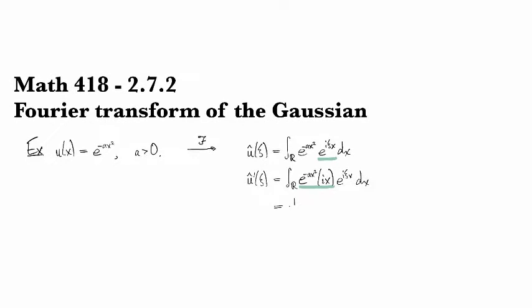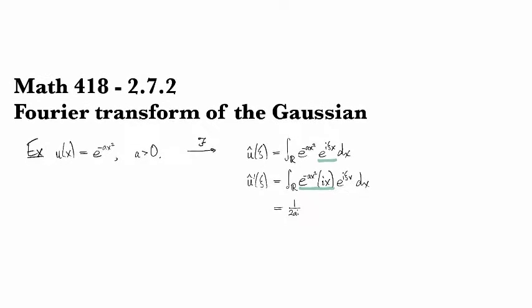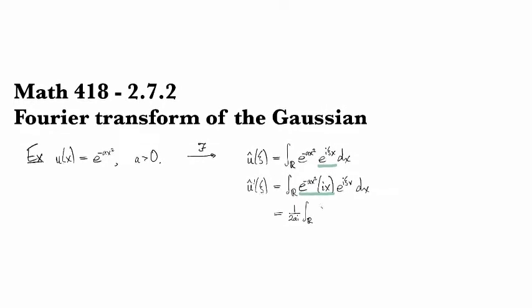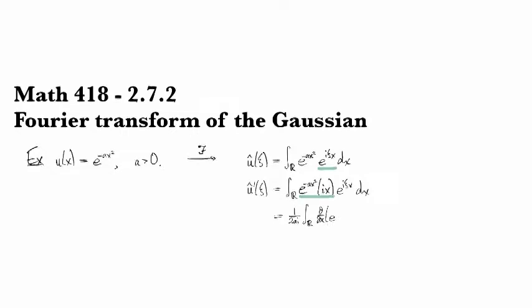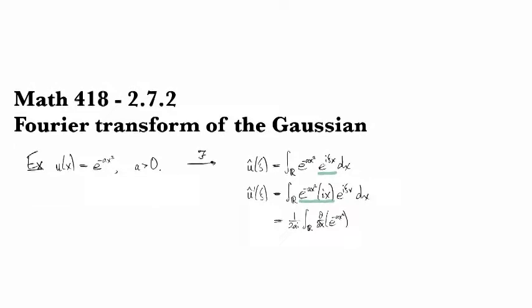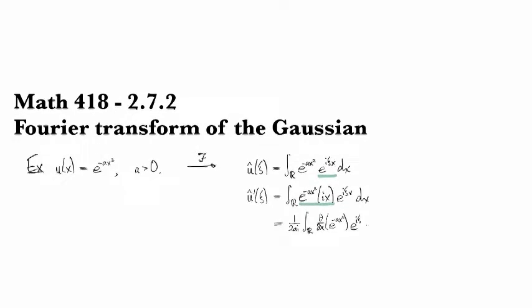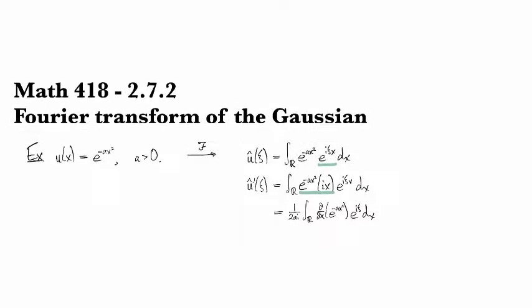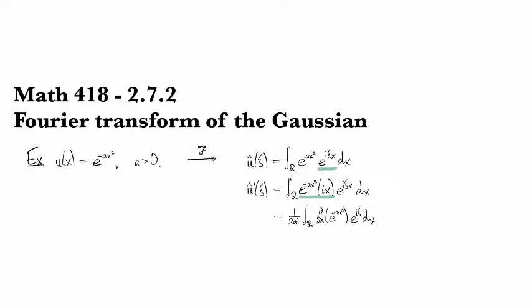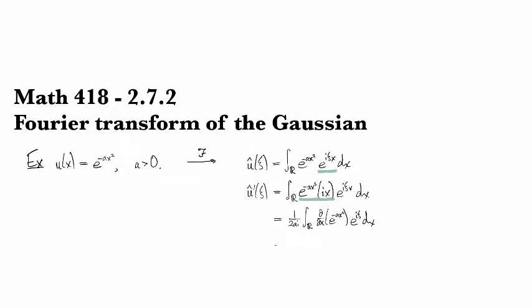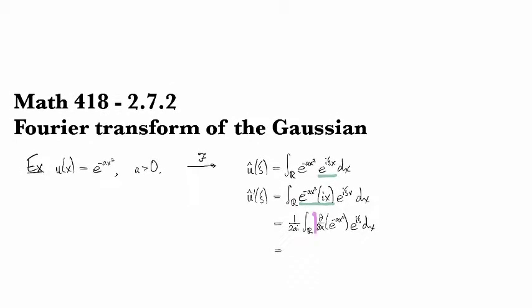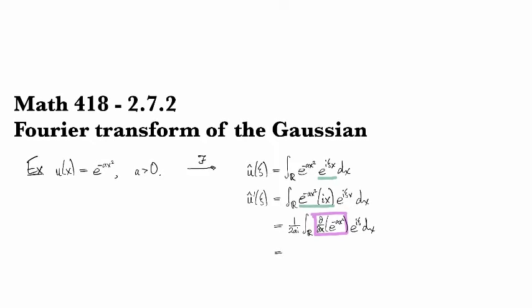So if I take that 1 over 2ai and put it out in front, then the stuff that's left inside is precisely d/dx of e to the minus ax squared. And the reason why that's useful is because we can recognize this integral here as being the definition of the Fourier transform of the derivative. So this thing right here is the thing being Fourier transformed.